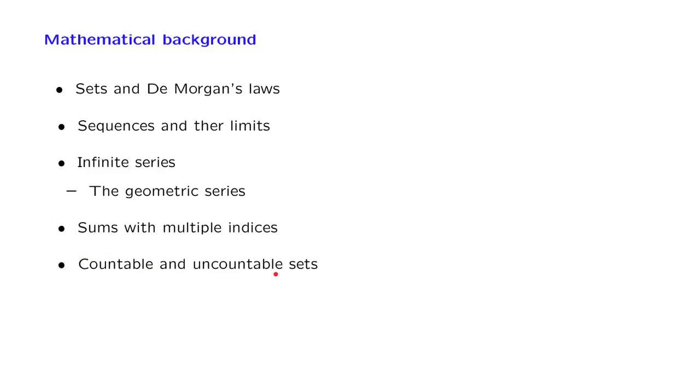Countable sets are like the integers. Uncountable sets are like the real line, and they're fundamentally different. This fundamental difference reflects itself into fundamentally different probabilistic models: models that involve discrete experiments and outcomes versus continuous models that involve continuous outcomes.